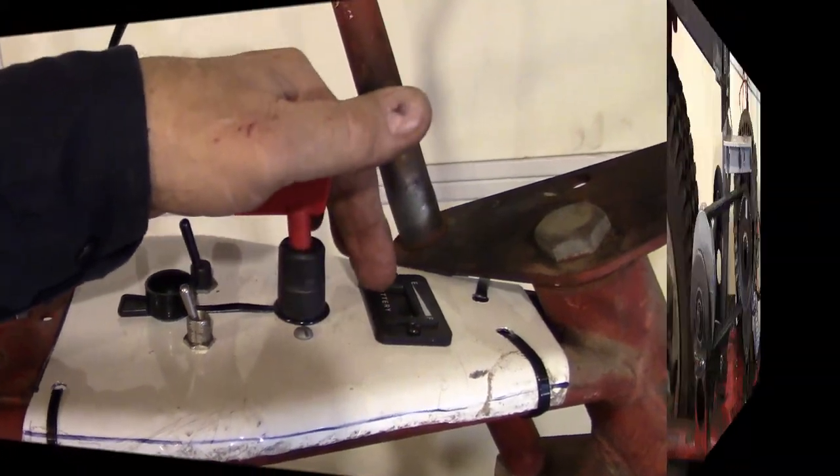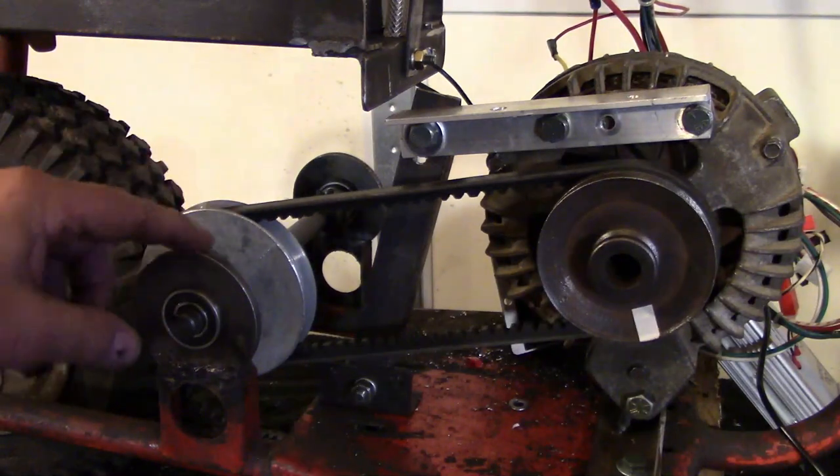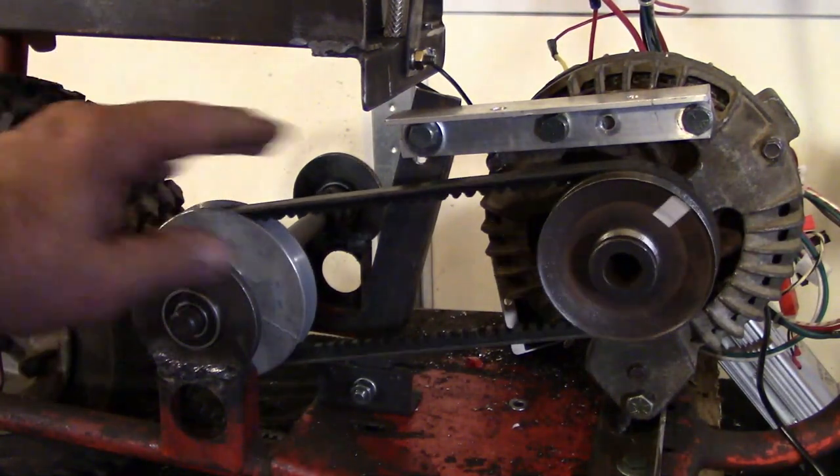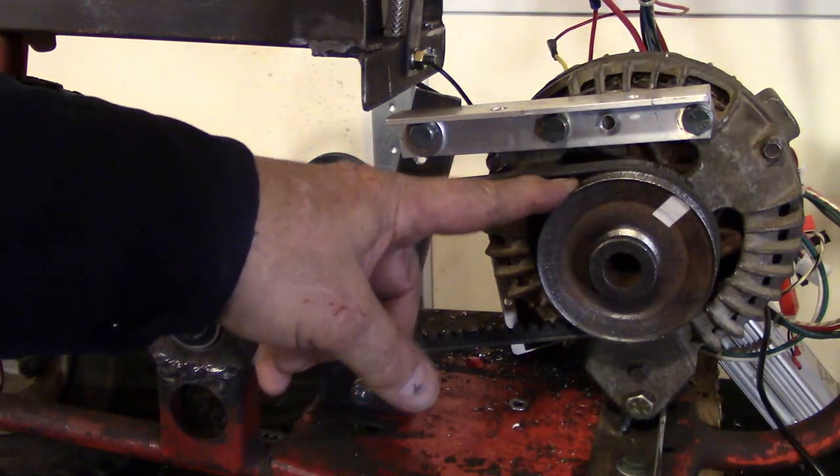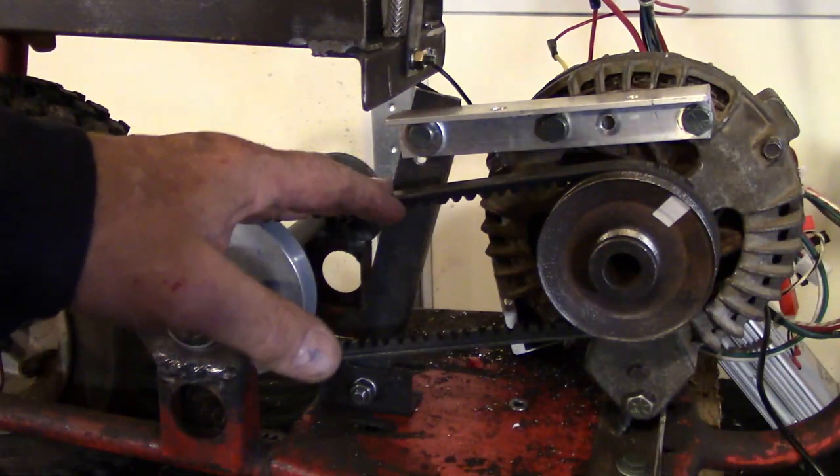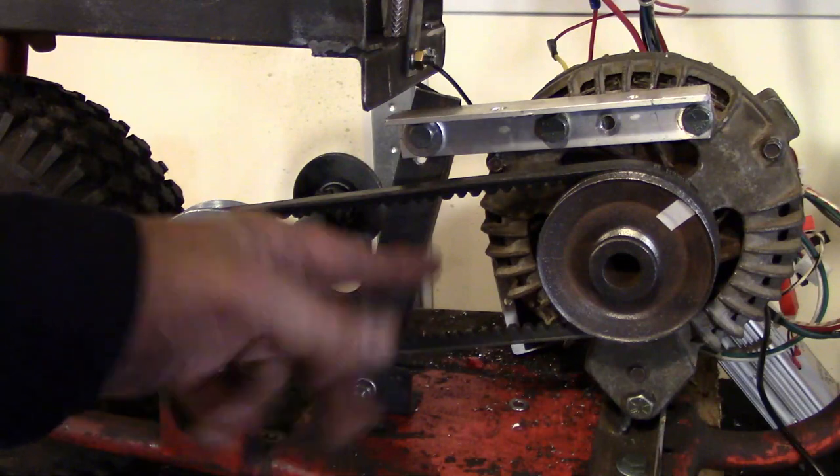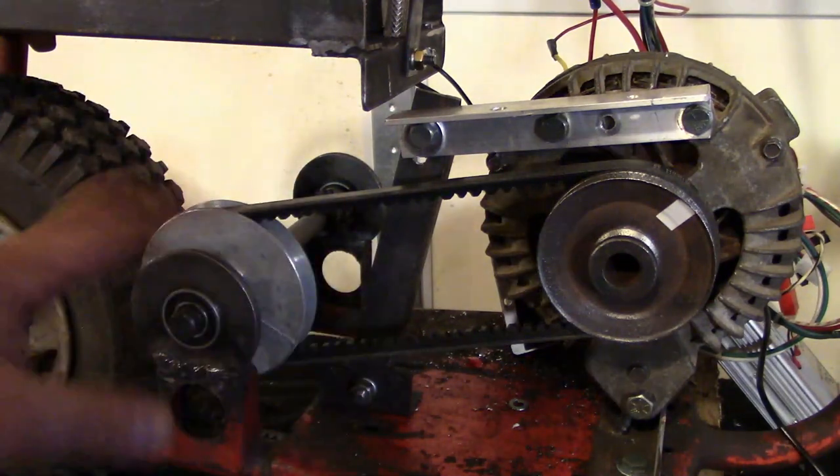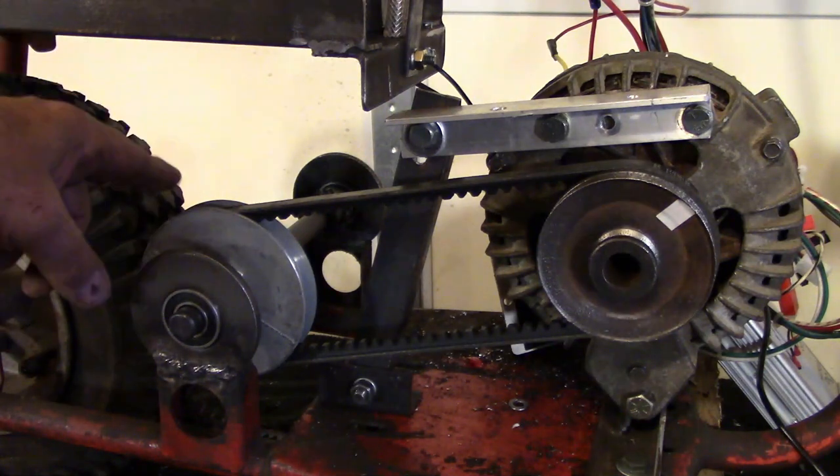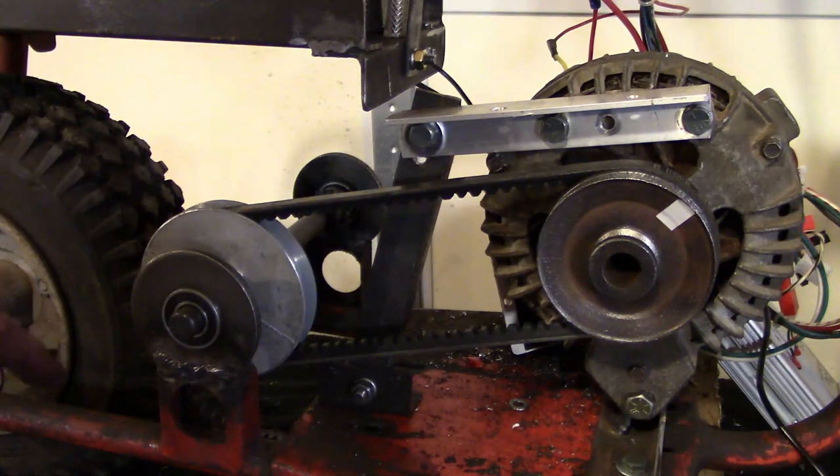What I've done here is I've used a go-kart or mini bike jack shaft. This pulley here on the alternator is about three and a quarter inch, and this is a four inch pulley. Just so happens I had this belt - I'm not sure what it went on, but I had it and so I kind of made it work for me. I have not got the chain on the rear wheel hooked up yet. I plan on doing that tomorrow.